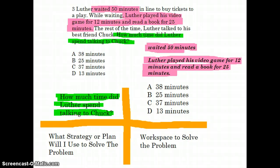Let's look at our problem again. It says, Luther waited 50 minutes. While he was waiting, he spent 12 minutes playing a video game and also 25 minutes reading a book. We're going to see what answer choices we can eliminate based on the information that's given in the problem.